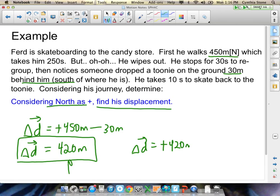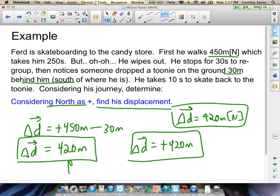420 meters. Whichever. Both of those, and then the third way would be delta d equals 420 meters north. All three of those are equally correct.